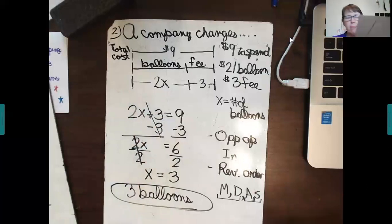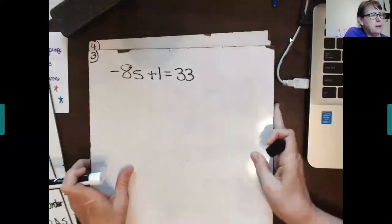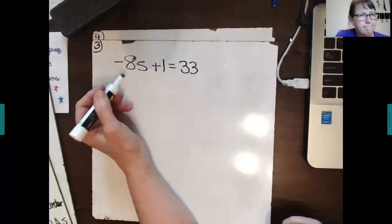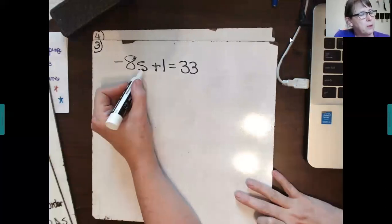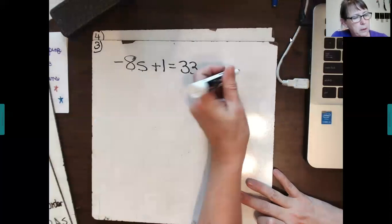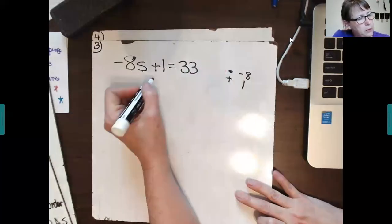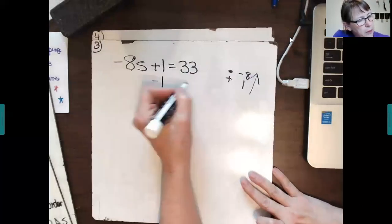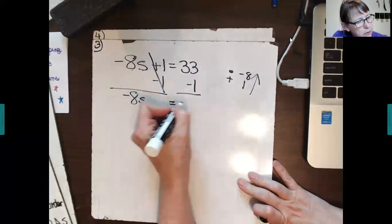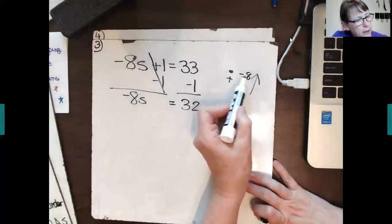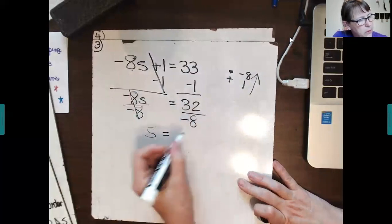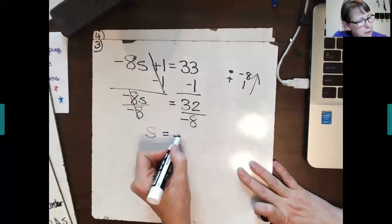A couple more problems. Here's this one right here. We're going to do the opposite operation in reverse order. Let's see what's being done for this variable. It's being multiplied by negative 8 and then added by 1. Multiply by negative 8 and added by 1. So, I'm going to go in reverse order. I'm going to subtract 1 from each side. This cancels. Copy the negative 8s equals 32. Now, I'm going to divide each side by negative 8.